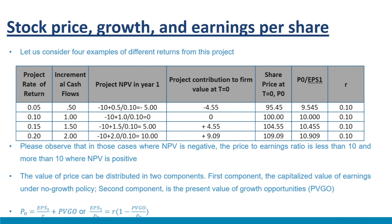Consider four examples of different returns from a new project. We compute the current share price for all these different returns. Note that where NPV is negative, the P/E ratio is less than 10, and where NPV is positive, the P/E ratio is more than 10. Where the NPV of the new project is 0, the P/E ratio is exactly 10. This gives intuition that the value of share price can be distributed into two components: first, the capitalized value of earnings under no-growth policy (EPS₁/R); and second, the present value of growth opportunities (PVGO). The relationship is: P₀ = EPS₁/R + PVGO, or equivalently EPS₁/P₀ = R × (1 − PVGO/P₀).